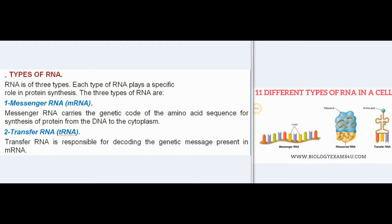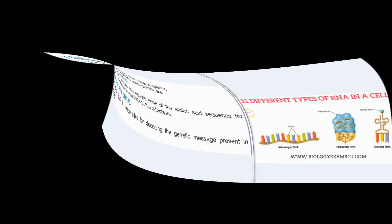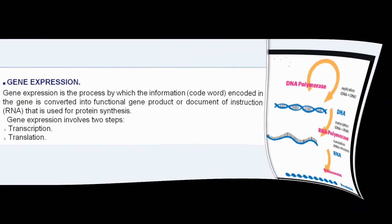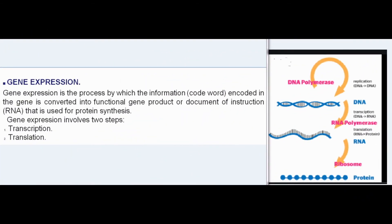RNA is of three types, each playing a specific role in protein synthesis: (1) messenger RNA (mRNA), which carries the genetic code of the amino acid sequence for protein synthesis from DNA to the cytoplasm; (2) transfer RNA (tRNA), responsible for decoding the genetic message present in mRNA; and (3) ribosomal RNA (rRNA), present within the ribosome, responsible for the assembly of protein from amino acids.